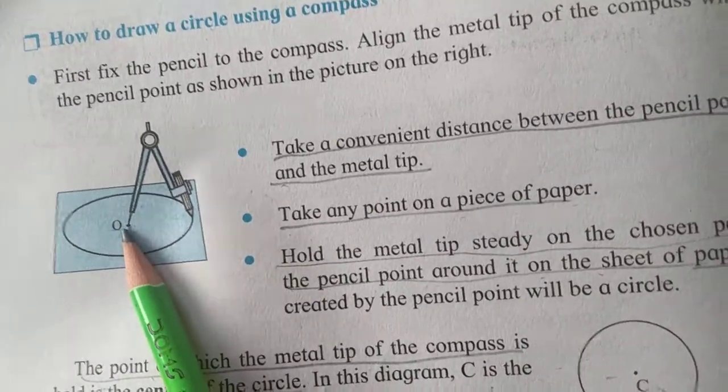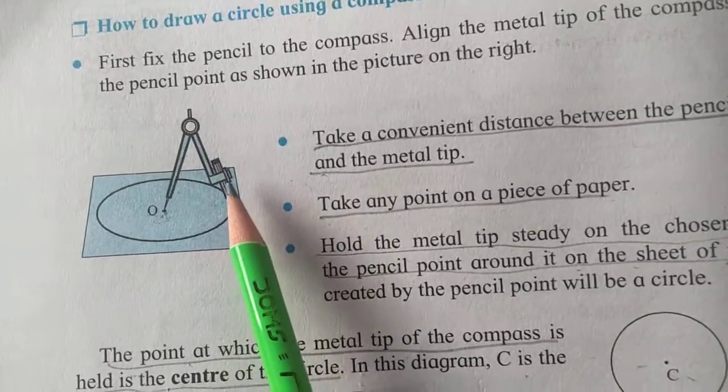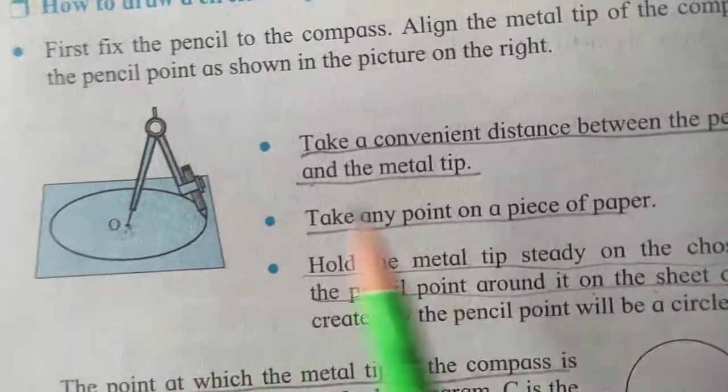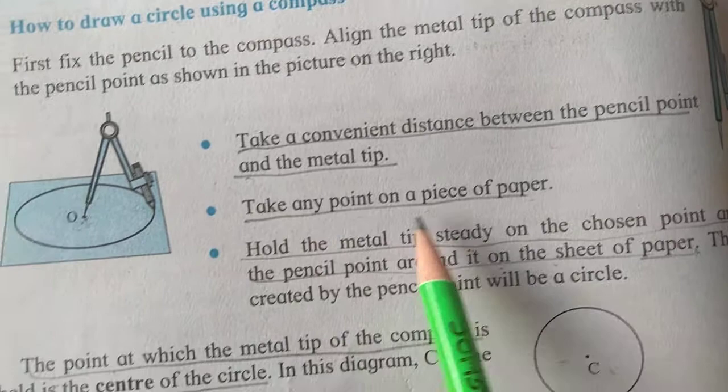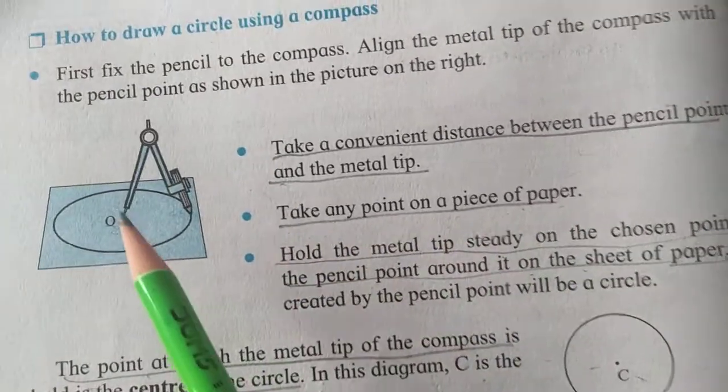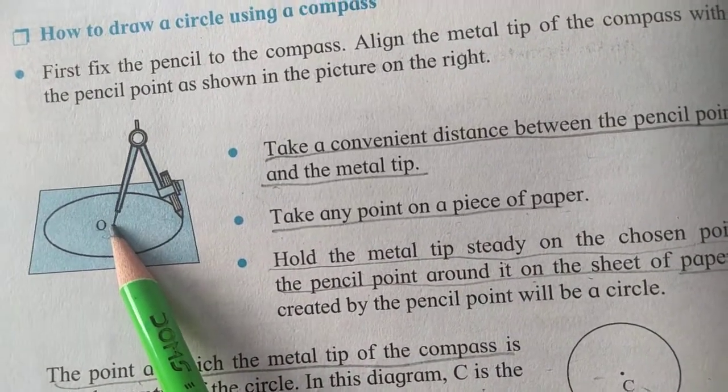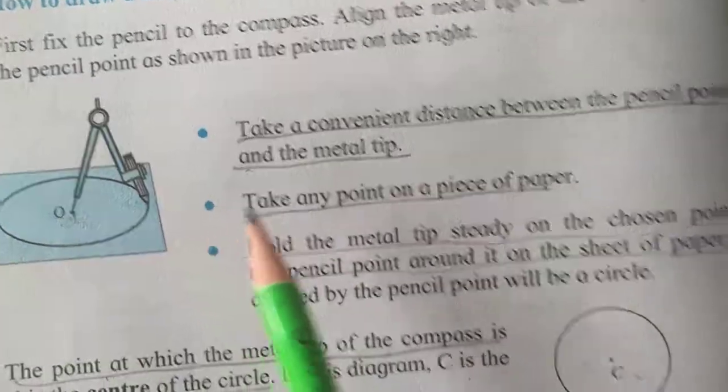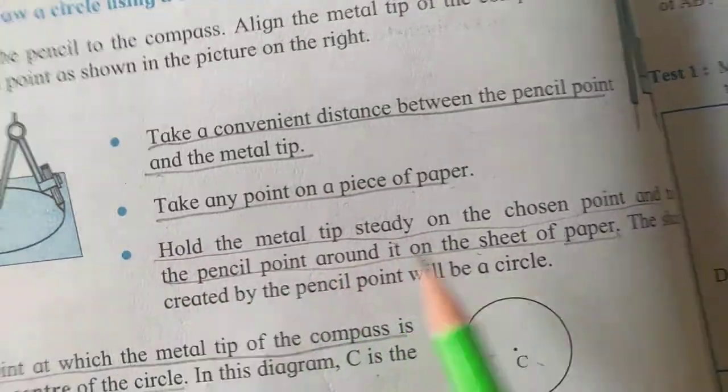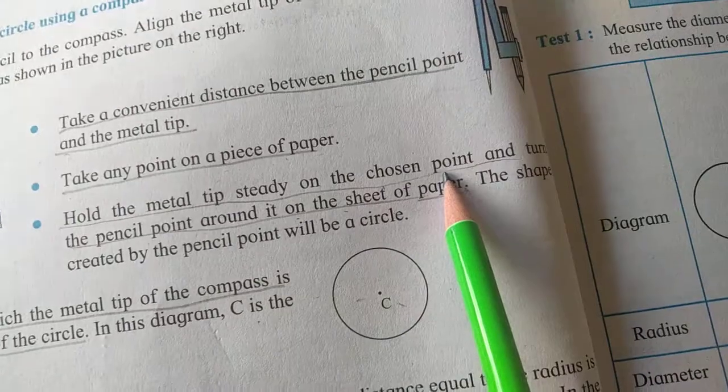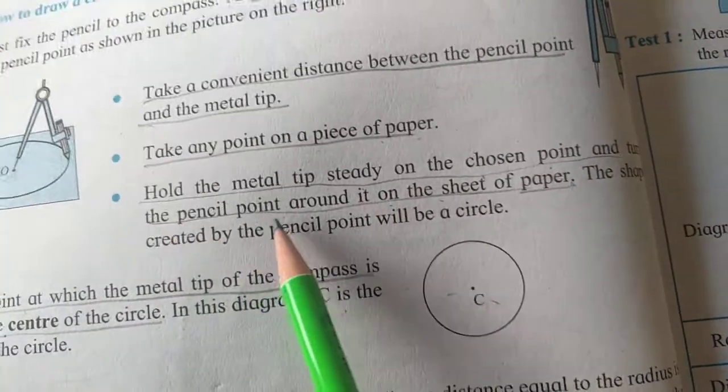Take any point on a piece of paper. Hold the metal tip steady on the chosen point and turn the pencil. The pencil point around it on the sheet of paper.